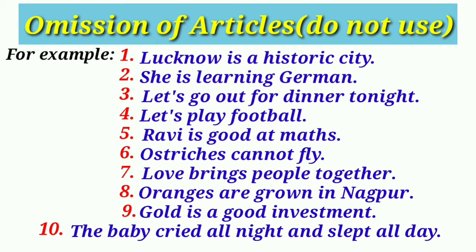Omission of articles: we do not use articles before names of people and cities. For example, Lucknow is a historic city. Before names of languages and nationalities: she is learning German. Before abstract ideas: let's go out for dinner tonight. Before names of sports: let's play football. Before names of subjects: Ravi is good at maths.